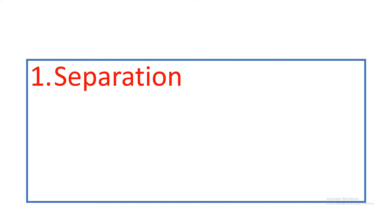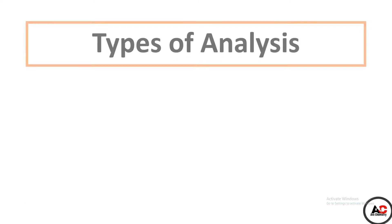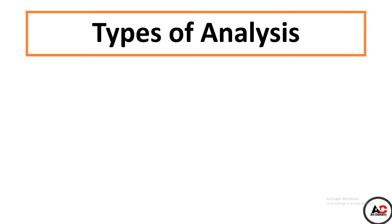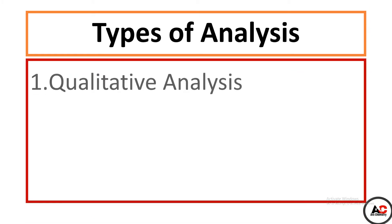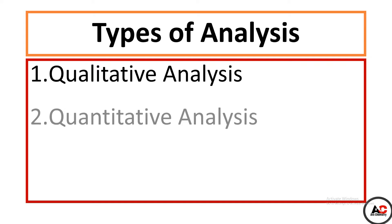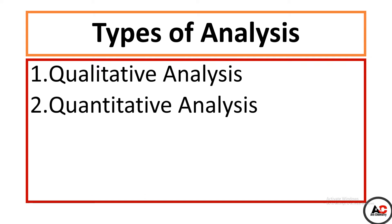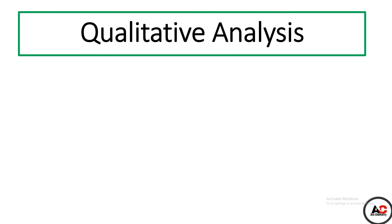Number one: separation, and number two: analysis. There are two types of analysis — qualitative analysis and quantitative analysis. یعنی ہم matter کی quality wise بھی analysis کریں گے اور quantity wise بھی۔ آئیے دیکھتے ہیں کہ qualitative اور quantitative کا کیا مطلب ہے۔